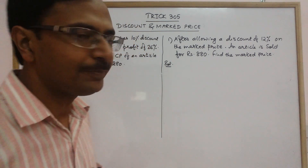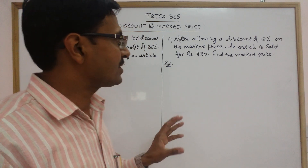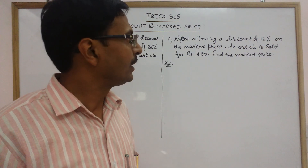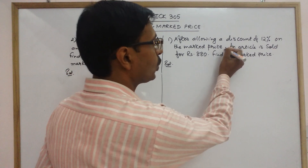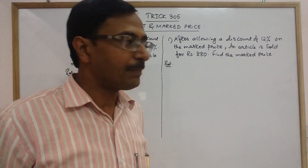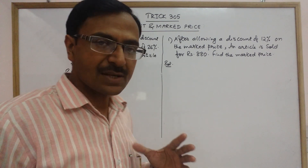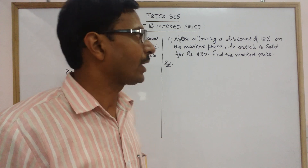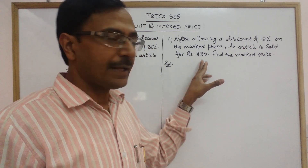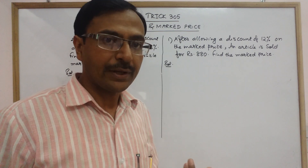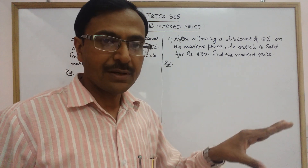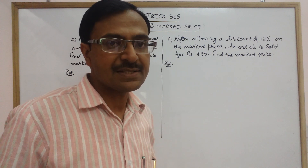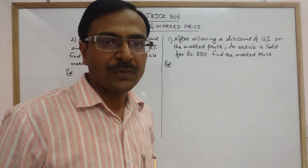So this is the first question. After allowing a discount of 12% on the mark price, an article is sold for Rs. 880. A shopkeeper is giving a discount of 12% on the mark price, and the selling price of the article is 880 after allowing that discount. We have to find what is the mark price — a very common and easy question that you need to solve in 10 seconds to succeed in competitive exams.